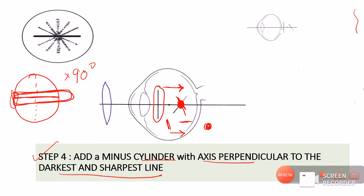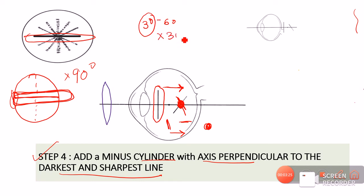An easier method to find the axis: the darkest horizontal line can also be written as the 3 o'clock to 9 o'clock line. Take the lowest clock number — which is 3 — and multiply by 30. That gives 90 degrees, which is the axis of the correcting minus cylinder. This cylinder moves the anterior focal line towards the posterior focal line, collapsing the Sturm's conoid.